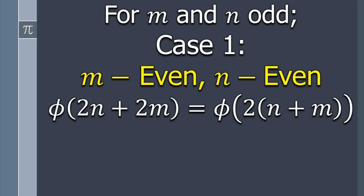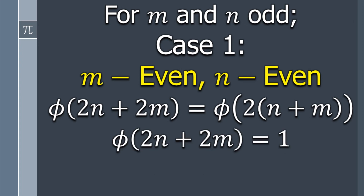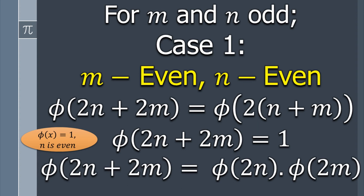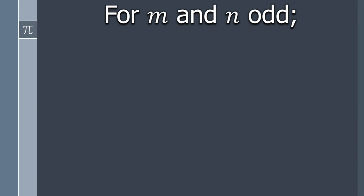The left-hand side is φ(2m + 2n). By taking 2 common from m and n, we have φ(2(m + n)). Since 2(m + n) is an even integer and φ takes the value 1 for even integers, the answer is 1. Similarly, φ(2n) and φ(2m) are also 1, so φ(2m + 2n) = φ(2m) × φ(2n). Case 1 is proved.